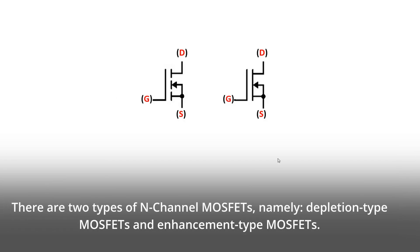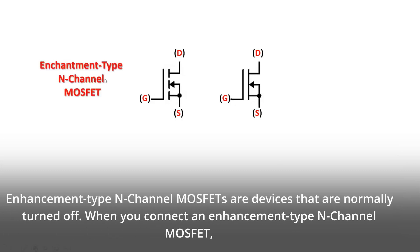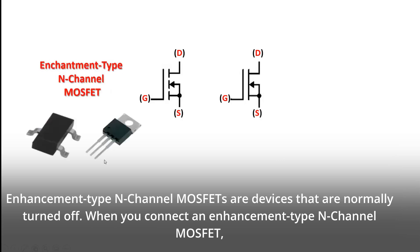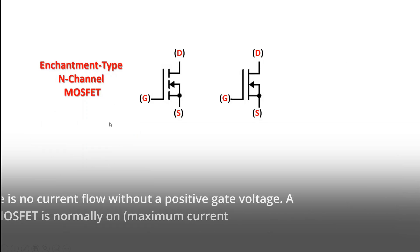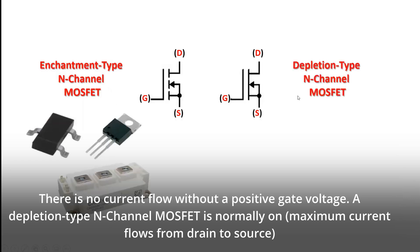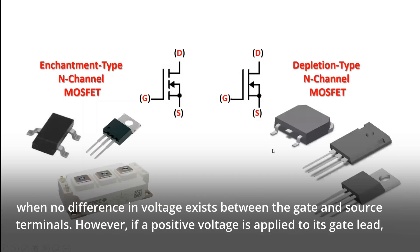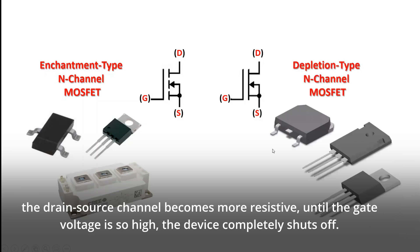On the other hand, a P-channel MOSFET is composed of majority holes as current carriers. There are two types of N-channel MOSFETs, namely depletion-type MOSFETs and enhancement-type MOSFETs. Enhancement-type N-channel MOSFETs are devices that are normally turned off — no current flows from drain to source when no voltage is applied to its gate, which is why it is called a normally off device. A depletion-type N-channel MOSFET is normally on; maximum current flows from drain to source when no difference in voltage exists between the gate and source terminals. However, if a positive voltage is applied to its gate lead, the drain-source channel becomes more resistive until the gate voltage is so high the device completely shuts off.